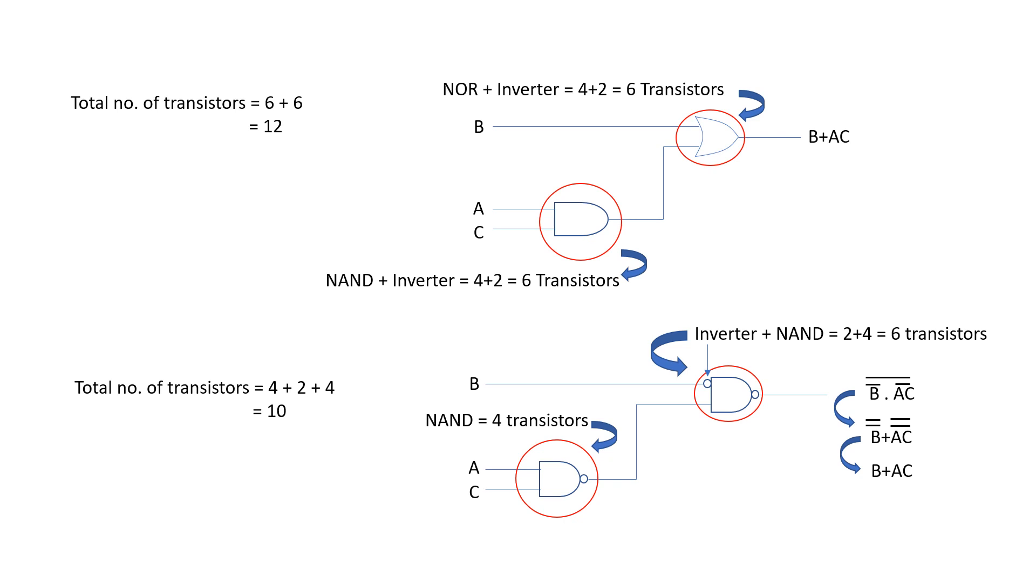AND gate is constructed using a NAND gate with an inverter. Same goes for an OR gate which is constructed using a NOR gate and an inverter. So for a 2 input NAND gate or a NOR gate, we need 4 transistors. And for an inverter, we need 2 transistors. So the total transistor count is 12.